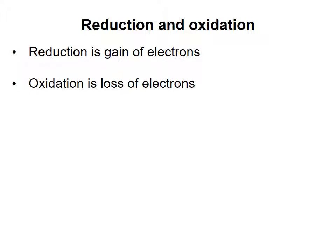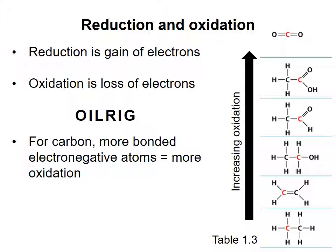A handy way to remember this is the mnemonic OIL RIG, which stands for oxidation is loss and reduction is gain. In organic chemistry, a carbon atom is said to become more oxidized as more electronegative atoms, such as oxygen, bond to it. This is because the electronegative atoms draw electrons away from the carbon atom, leaving it relatively electron poor.